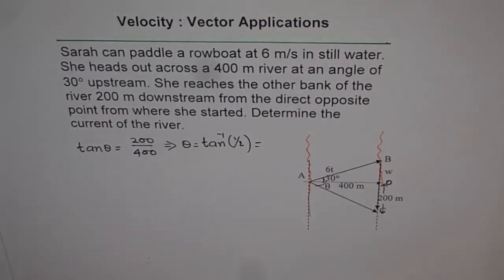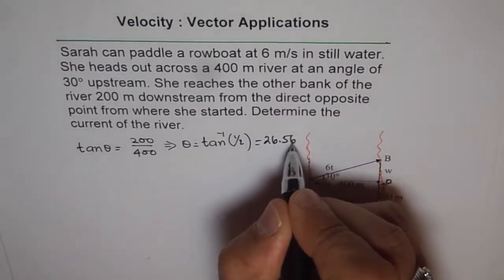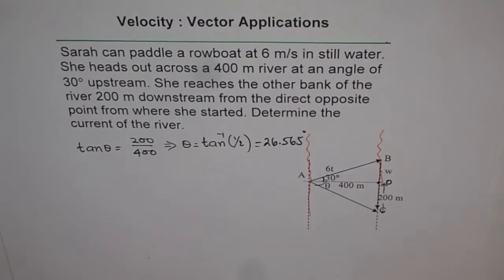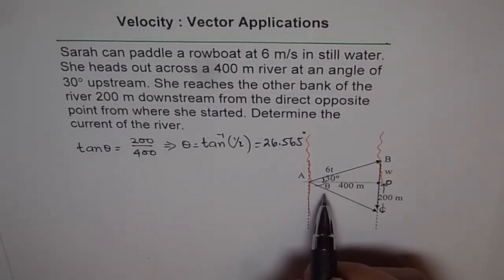This implies that theta equals tan inverse of one half. Using a calculator — second function, tan inverse, bracket one half — we get 26.565 degrees. When doing trigonometry and reusing an angle, I recommend four decimal places for accurate results. For now we'll go with three decimal places, so theta is 26.565 degrees.